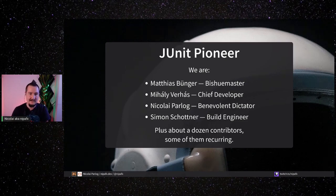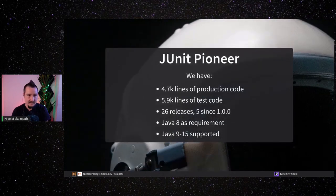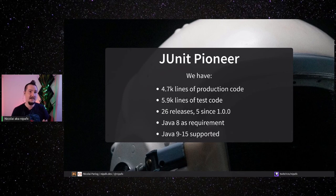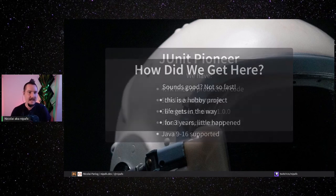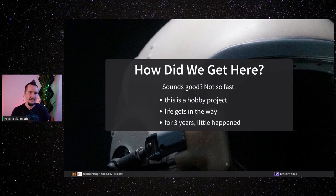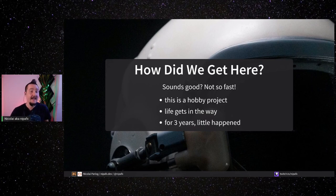We have 10,000 lines of code — a little less than half is production code, almost 6,000 lines are test code, which I'm kind of proud of. We have 26 releases, five since we released 1.0. We require Java 8 and support Java 9 to 16. But that's not actually the whole truth — this is a hobby project and life got in the way several times. For three years, very little happened. Looking at the commit graph from GitHub: in the beginning there was some experimentation, then an excitement phase, then in 2018 almost a year where nothing happened, then we finally took off, then over a year where nothing happened again, and now we're running on cruise control.